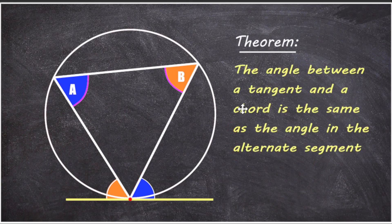So there you have it — the proof of the theorem. The angle between a tangent and a chord is the same as the angle in the alternate segment.